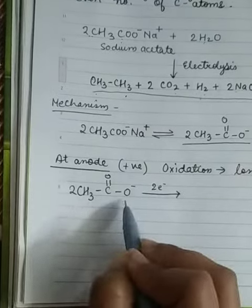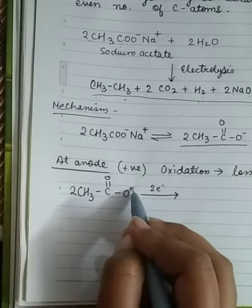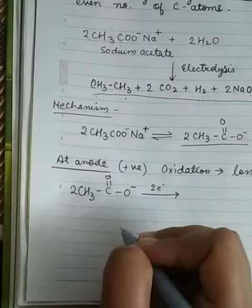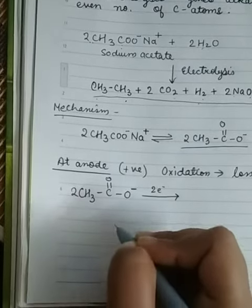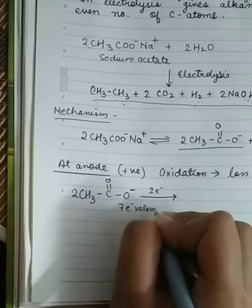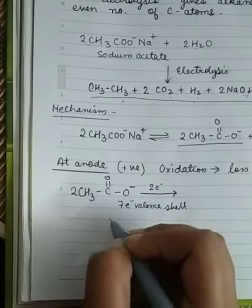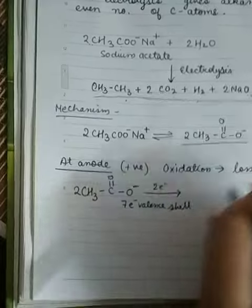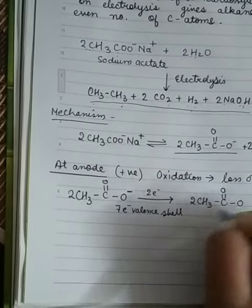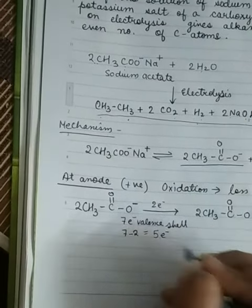Here we take CH3-C double bond O single bond O minus. Here we have a negative charge on oxygen. Oxygen has six valence electrons in its valence shell and due to presence of a negative charge it has gained one electron, so it has seven electrons. When we remove two electrons from here, it will give you CH3-C double bond O single bond O with five electrons.